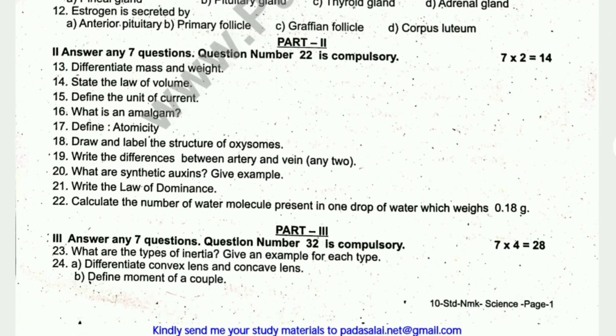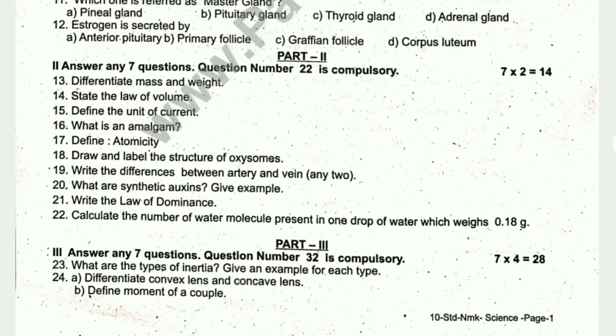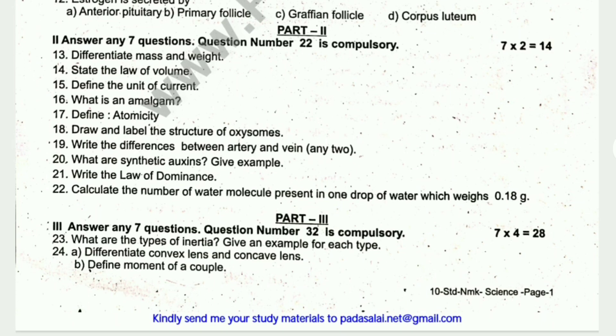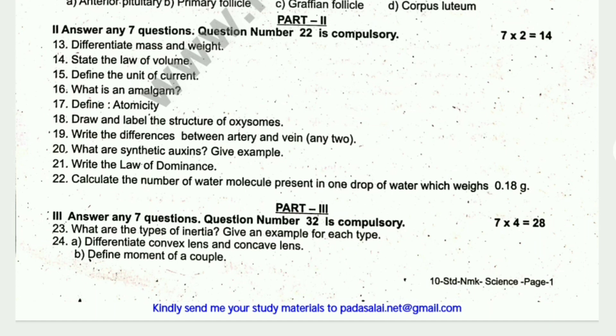Next is Part 2, questions 7 to 14, worth 2 marks each — 22 marks total, compulsory. If you have a total of 9 questions, answer any 8. Topics include: differentiate mass and weight, law of volume, unit of current, amalgam, atomicity, labeled diagram of oxysomes, difference between artery and vein, synthetic fiber with examples, and law of dominance.